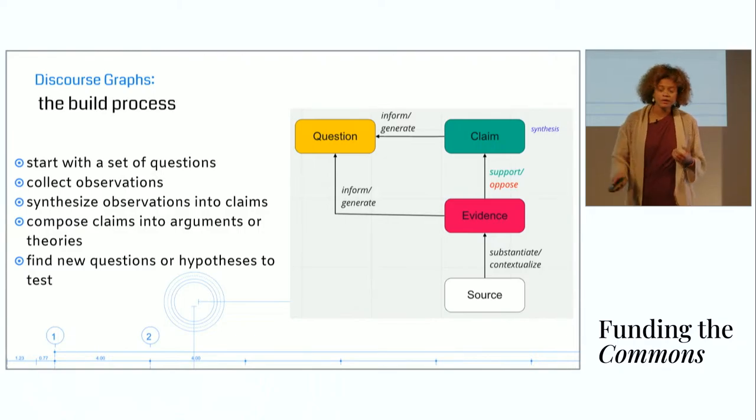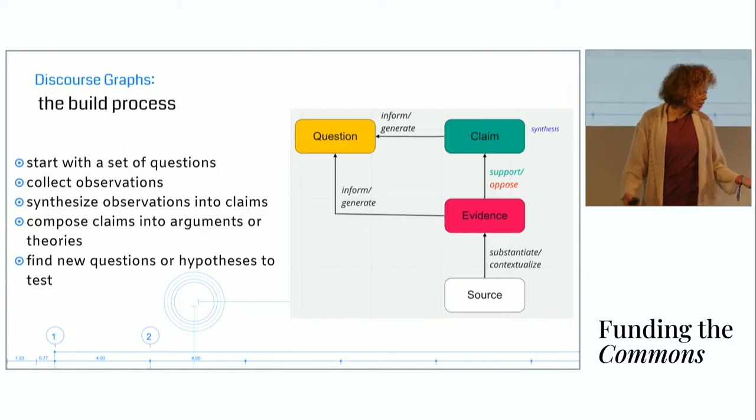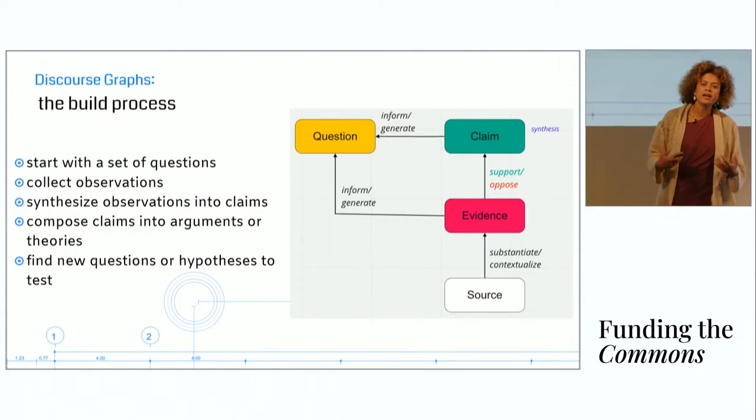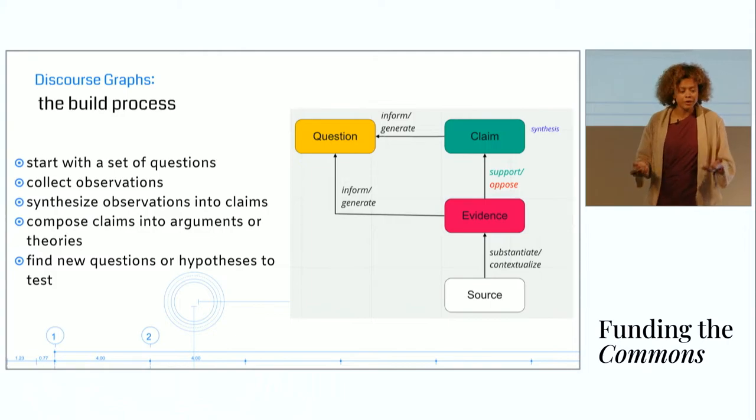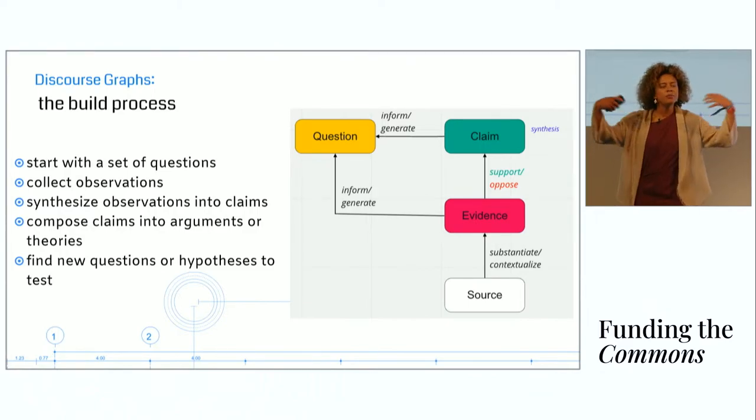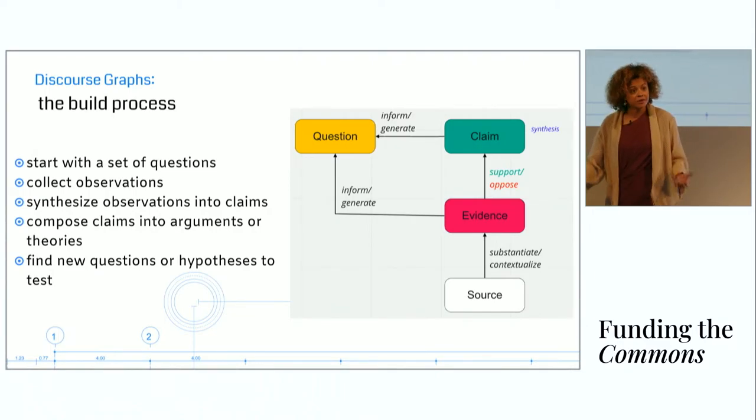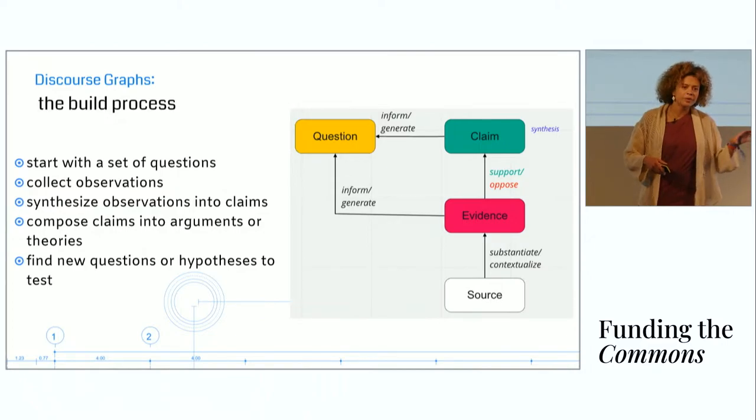The build process: when you're creating a discourse graph, you start with a set of questions and collect observations to begin to address those questions. I should mention those two steps are often reversed, especially in empirical science. A lot of times we make an observation about the world, we say 'huh,' and that generates some questions. I think a lot of science is precipitated by 'huh' more often than Eureka. Then we synthesize. We've made a bunch of observations, synthesized them into claims about the world. Then we compose those claims into arguments and theories. And then we find new questions or hypotheses to test. This is a very familiar recapitulation of the process of scientific inquiry.